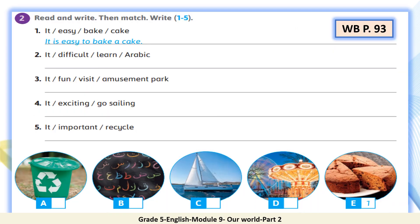Open your workbook page 93. Read and write, then match. Let's do number one as a model: 'It's easy to bake a cake.' Let's match E with number one — 'It's easy to bake a cake.' Now pause the video and write your sentences, then match.